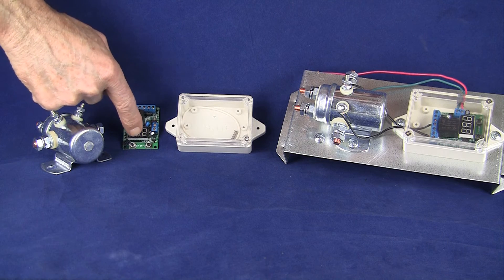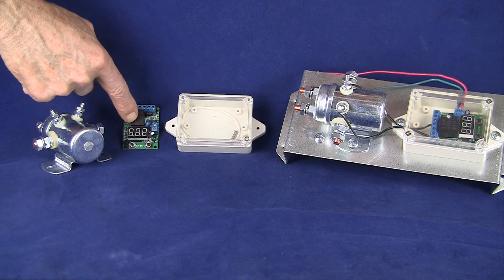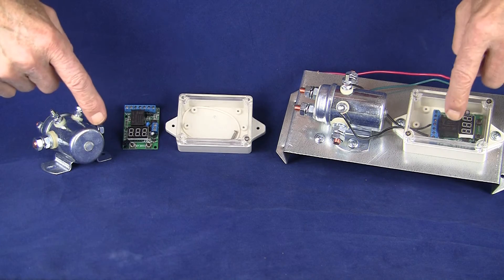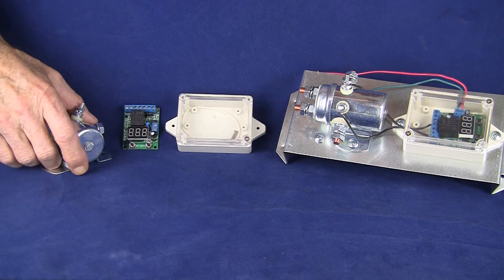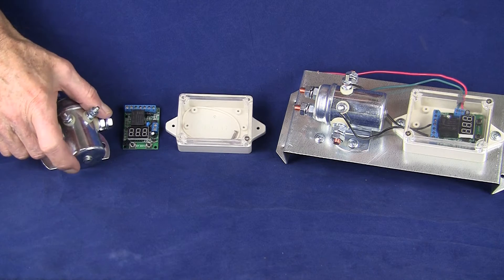You're going to get the therm circuit board. This is your actual controller, the same one that's in the one from California. Clear plastic box. And you're going to get a relay.